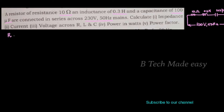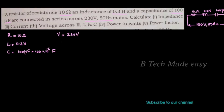The value of R is equal to 10 ohm, L is equal to 0.3 henry, and C is equal to 100 into 10 raise to minus 6 farad. The value of the voltage is 230 volt and the value of the frequency is 50 hertz.